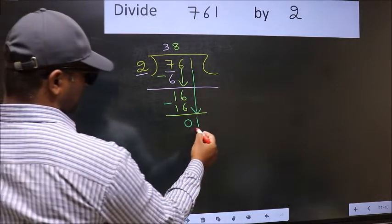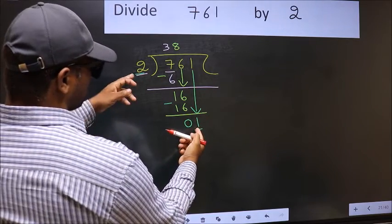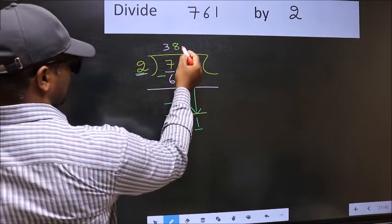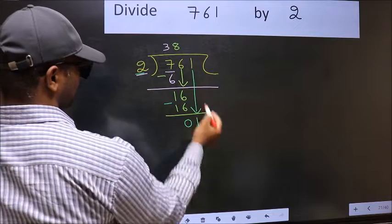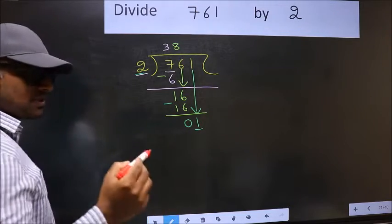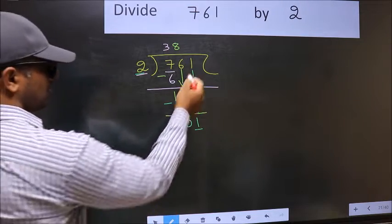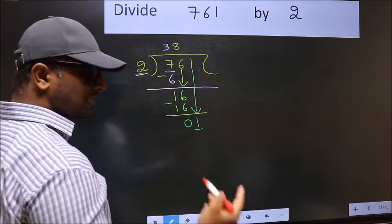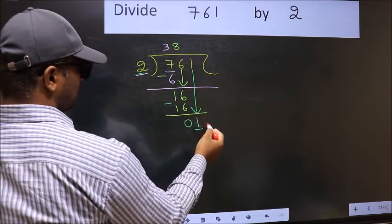Here we have 1 and here 2. 1 is smaller than 2. So, what many do is they directly put a dot and take 0, which is wrong. Why is it wrong? Because just now you brought this number down.